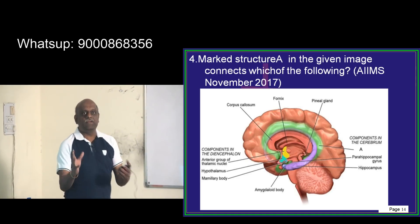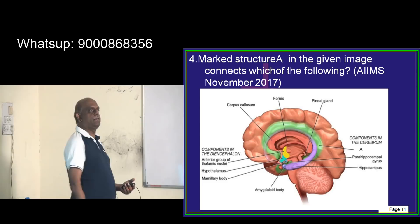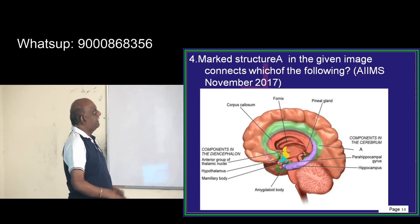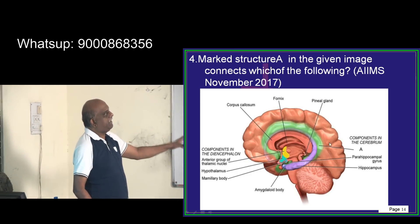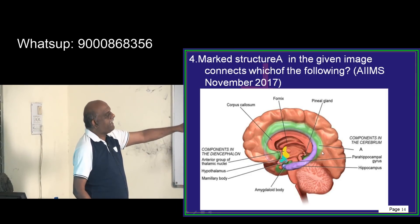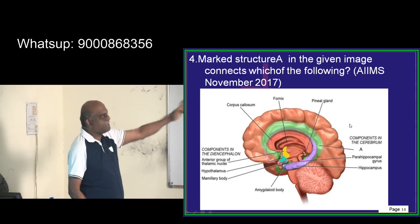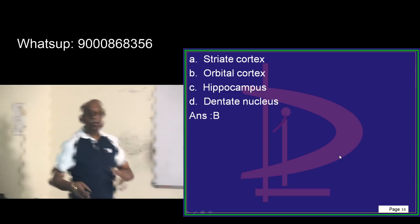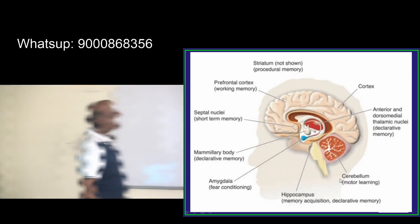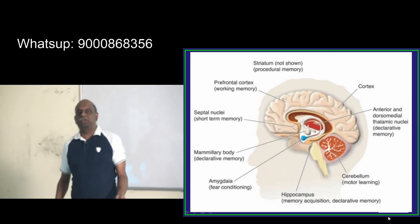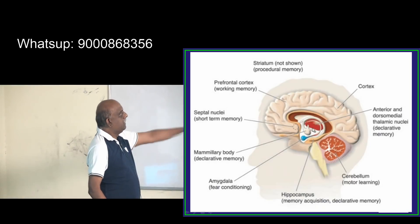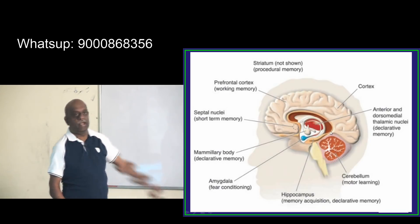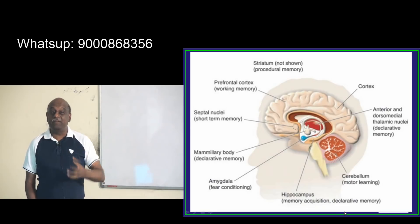There was an interesting image-based question in AIIMS November 2017 about the limbic system. A structure was shown and the cingulate gyrus was identified — the question was: what is it connected with? It is connected with the orbitofrontal cortex. The components of the limbic system include the anterior and dorsomedial thalamic nuclei, which are very important for declarative memory.